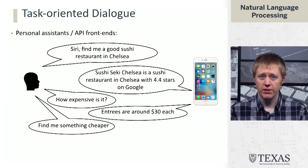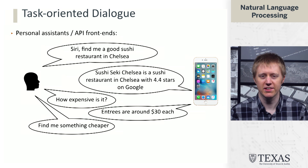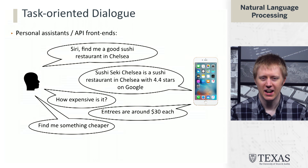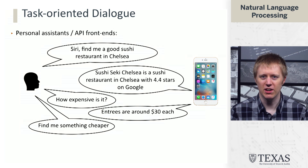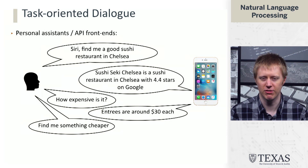This is obviously very different than the chatbot setting. If you throw this into one of the chatbots, maybe there's some chance it would produce the name of a real restaurant, but it certainly wouldn't be able to accurately tell you what the prices are or handle the idea of actually doing a search for a cheaper restaurant.